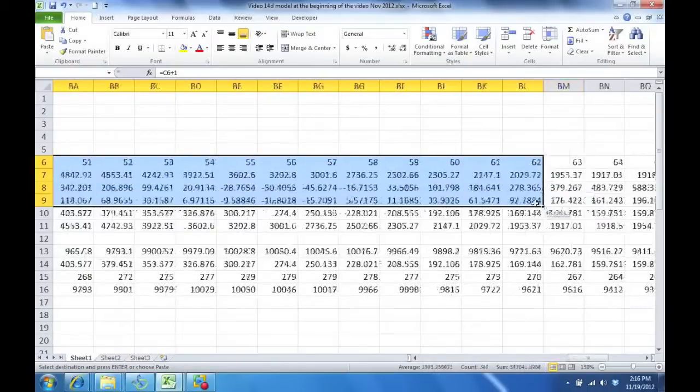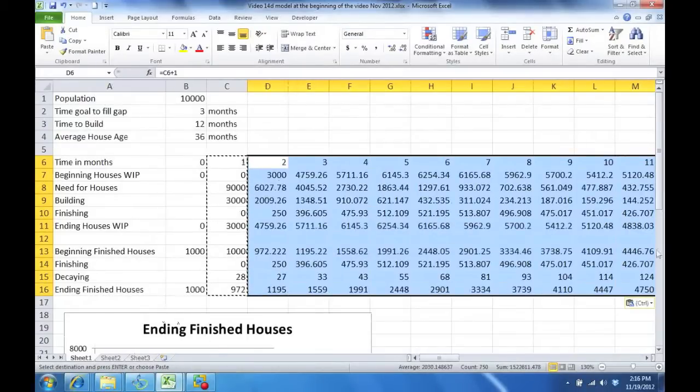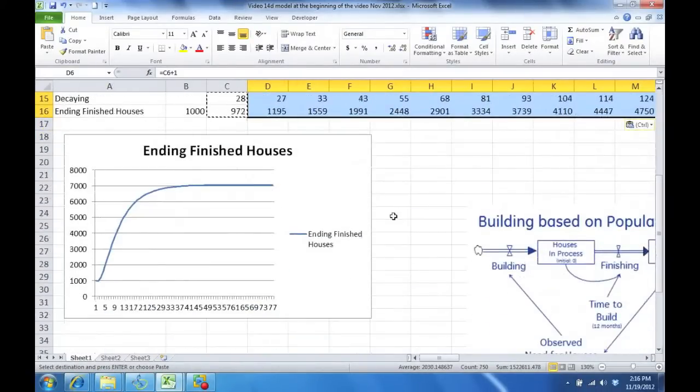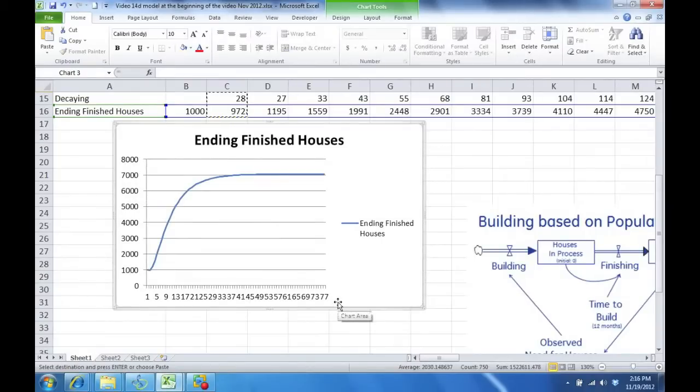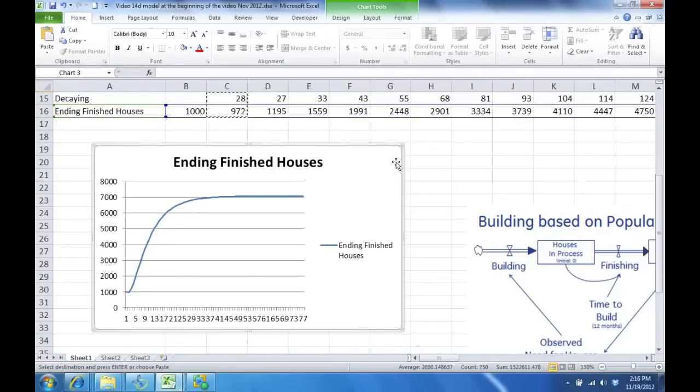We'll scroll down. Well, that fixed one problem. You can see now we smoothly, we don't oscillate, we don't overshoot the number of houses. We basically stabilize at 7,000 houses, which is a little strange because we wanted to have 10,000 houses. So what we'll do is let's go back to the board and discuss why we have that problem and what we can do to resolve it.